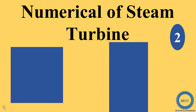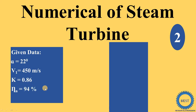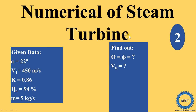In this video, we solve the second numerical of steam turbines. Compared to the last numericals, in these numericals the value of Vb is not given. In the last numericals, the velocity of blade was given, but in this numerical the blade velocity is not given, so we also need to calculate the blade velocity.